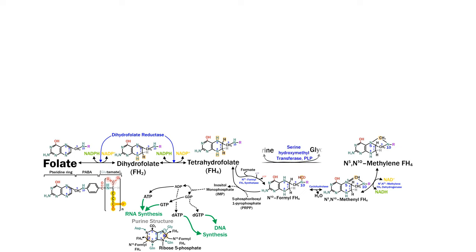There's actually a shortcut directly between tetrahydrofolate and the methylene form, using serine hydroxymethyltransferase. This is a reaction that requires vitamin B6 as PLP, and it converts serine to glycine, using the serine as a single carbon donor. You can also achieve the same reaction with glycine itself using the glycine cleavage system, which takes a carbon from glycine and converts the rest to CO2 and ammonium.